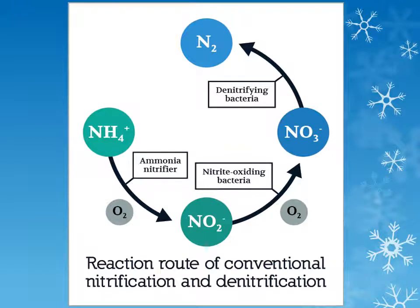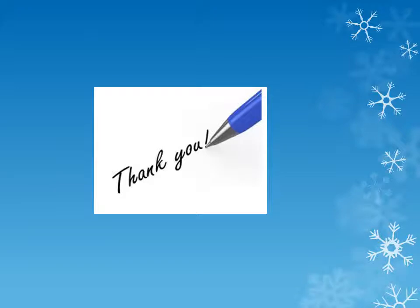This figure shows the reaction route of the conventional nitrification and denitrification process. Ammonium ions are oxidized to nitrites in the presence of nitrifying bacteria, then nitrites are further oxidized to nitrates in the presence of nitrite-oxidizing bacteria. The nitrates formed are then anaerobically converted to nitrogen gas in the presence of denitrifying bacteria. That's all about nitrification and denitrification. Thank you.